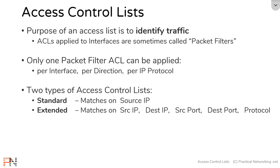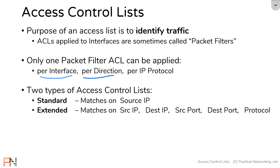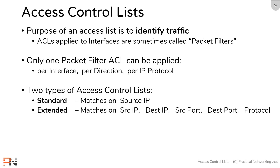In the first video, we answered the question: what are access lists? We defined them as a tool you use to identify traffic. We talked through how when you apply an access list to an interface, you can call it a packet filter, and a packet filter can only be applied once per interface, per direction, and per IP protocol. We then defined the two types of access lists: the standard access list and the extended access list.